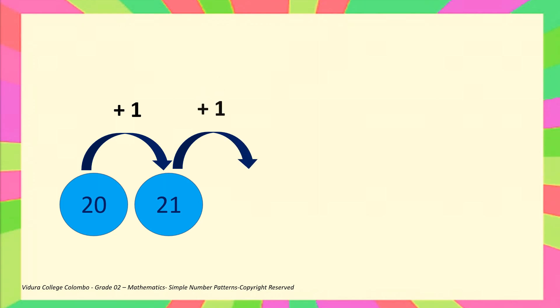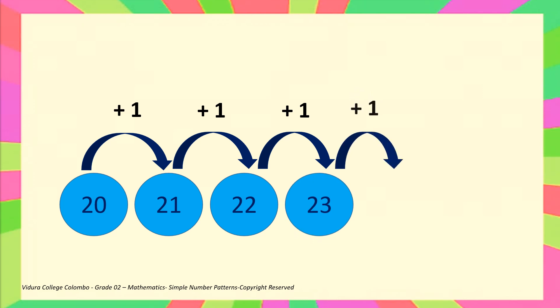Second one. 20, 21. The gap in between 2 numbers is 1. 21 plus 1 is 22. 22 plus 1 is 23. 23 plus 1 is 24. 24 plus 1 is 25. You can see the gap is shown in black color.